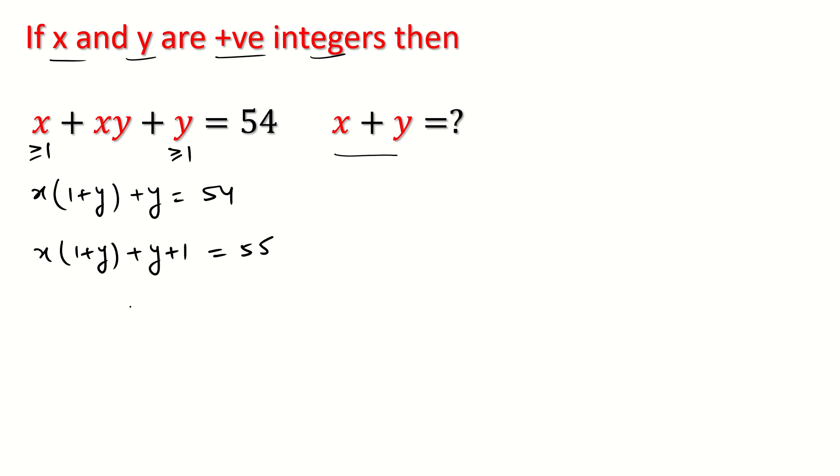And we can write this: x times (y plus 1) plus 1 times (y plus 1) equals 55. When we factor it, (x plus 1) times (y plus 1) equals 55.